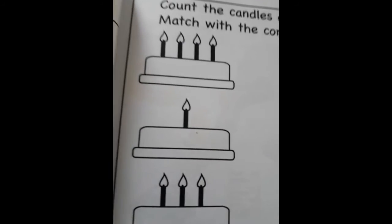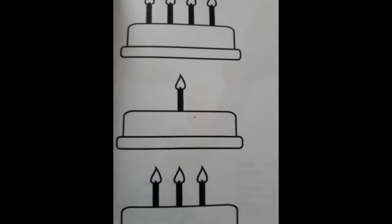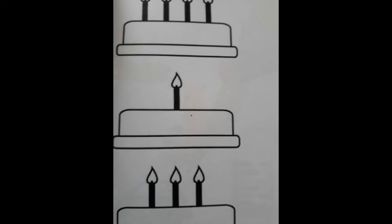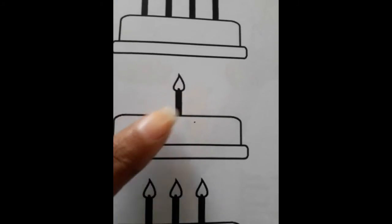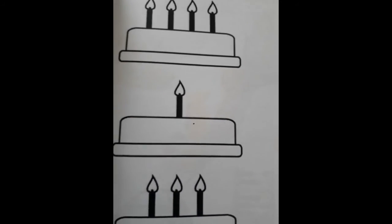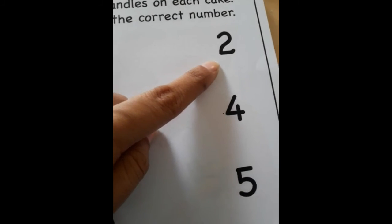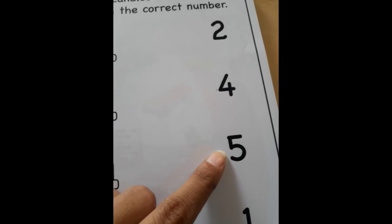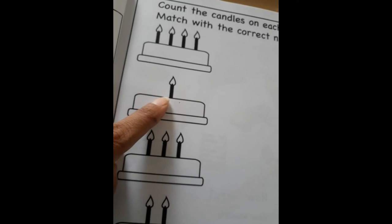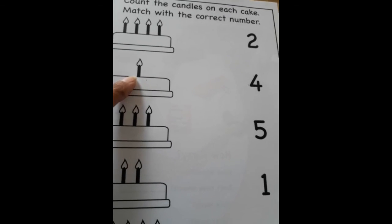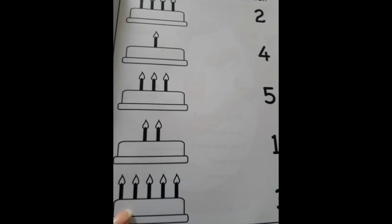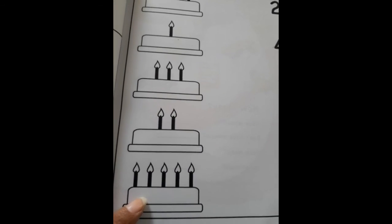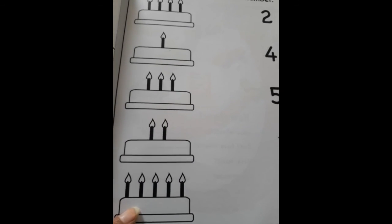Now come down — this one cake. How many candles are here? There is only one candle. And where is number one? Is this number one? No. Is this number one? No. Is this number one? No. This is number one — yes. You have to match the number one candle with number one.